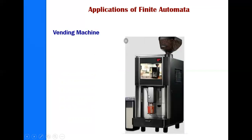Another example is a vending machine for tea or coffee. When you insert the coin, only then the next state appears asking whether you want coffee or tea. When you click tea or coffee, only then the next process is done. The machine moves from one state to the next — inserting coin transitions to the next state, then selection transitions again. This is a real good example of finite automata.